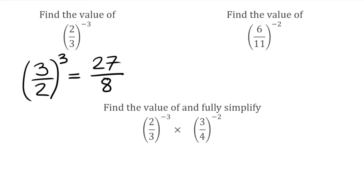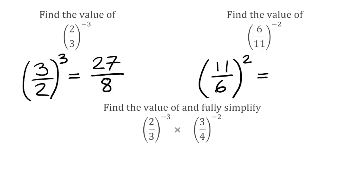For our next question, we've got 6 over 11 to the power of negative 2. Negative power, so we take the reciprocal and flip the fraction — this becomes 11 over 6, then we apply the positive power of 2, squaring it. Squaring top and bottom: 11 squared is 121, and 6 squared is 36. So the final answer is 121 over 36.